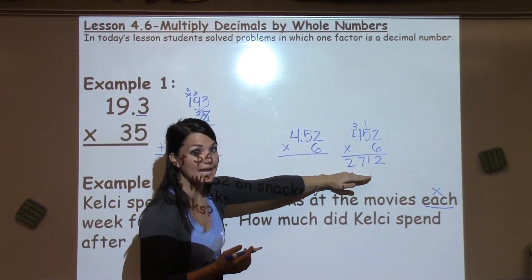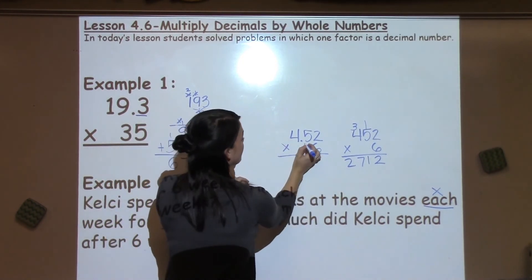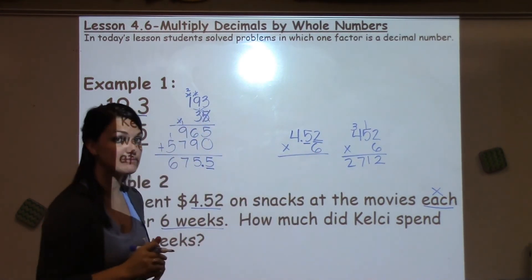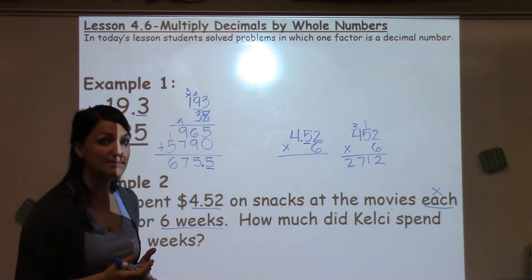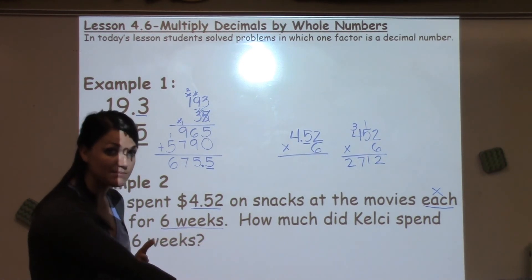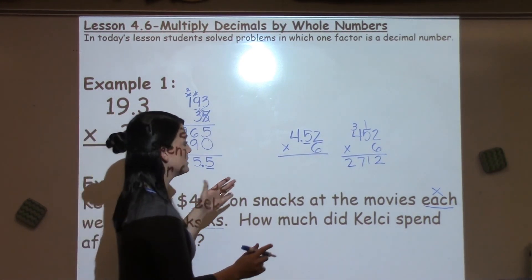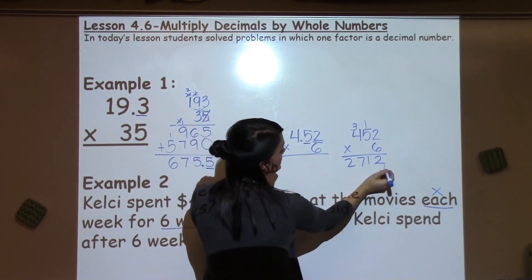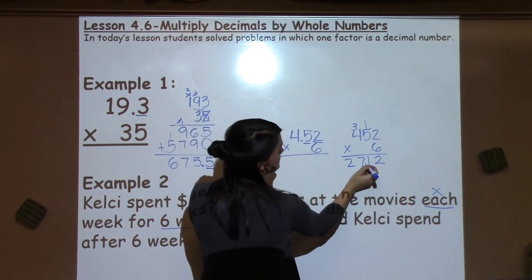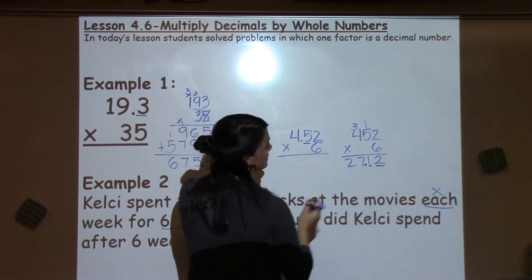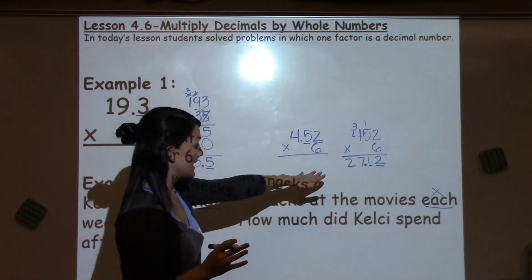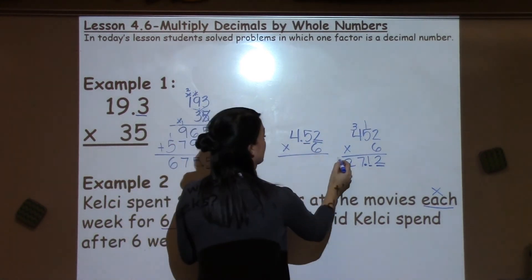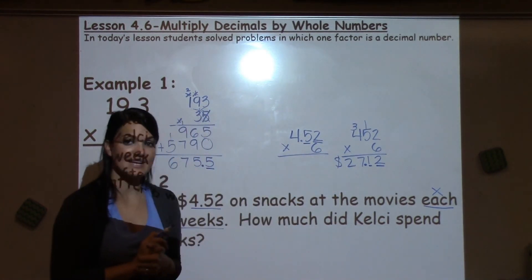I look back at my problem and see how many numbers are behind the decimal in my problem — that same amount needs to be behind my decimal in my answer. I've got 2 numbers behind the decimal in my problem, so I want 2 numbers to be behind my decimal in my answer. That gives us a final answer of $27.12.